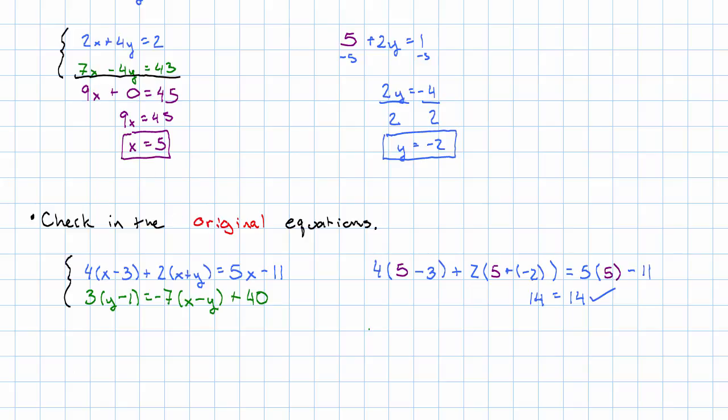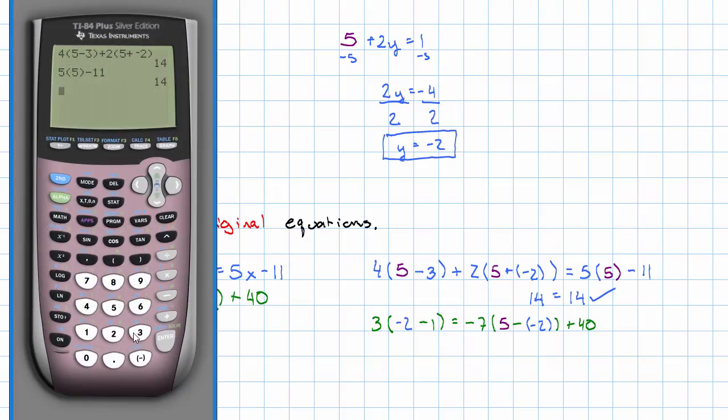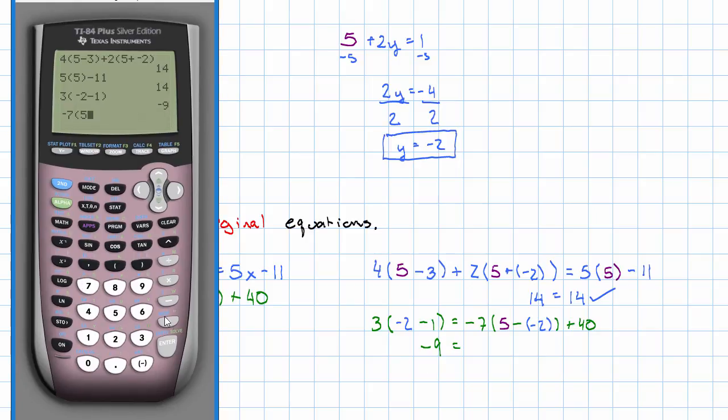Plugging into the second equation, we'll have 3 times (y is -2) - 1 = -7(x-y) + 40. So, in the calculator again, 3 times -2 minus 1, that's -9. Negative 7 times 5 minus -2 plus 40, also -9.